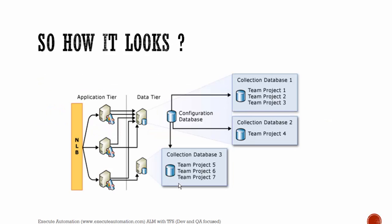This is how a project collection looks. This is the project tier and this is the data tier, and it has a configuration database. It will have a collection database which holds all the team projects. The configuration database can have any number of collections within that particular configuration, and every team project will be there in the particular collection databases.